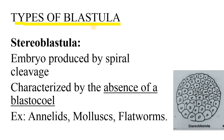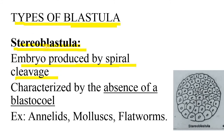Next topic is types of blastula. The first type is the stereoblastula, which occurs as a result of spiral cleavage. The main characteristic of stereoblastula is the absence of a blastocoele — there is no blastocoele. This occurs in annelids, mollusks, and flatworms.